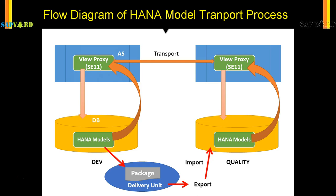This is a positive scenario where there is no issue — we are assuming everything goes in place. There is no issue in the sequence of the exported file being imported, or in the sequence of the transport moved from the application server to the application server of the quality system. This is a happy path model, but if we are not careful it might lead to issues. In the next slides we'll see what can go wrong in this transport model.